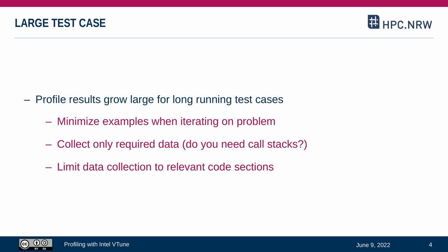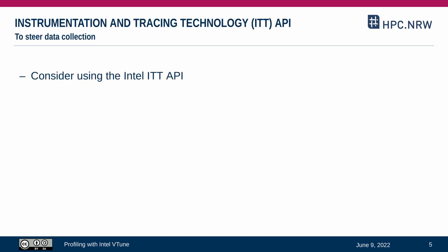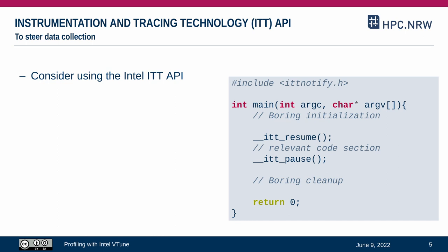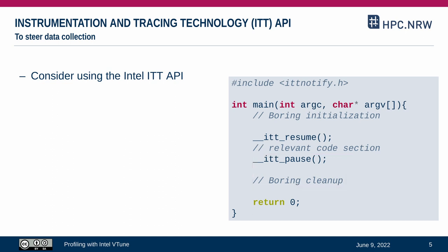Finally, you can limit the data collection to only a small subsection of your application. This is possible with the Intel Instrumentation and Tracing Technology library. With the ITT API, you can signal vTune to resume or pause the collection from within your program code. In this minimal example, we start vTune with paused collection and skip irrelevant sections of the program initialization. Then ITT instructs vTune to start the collection for the interesting code section. At the end, we pause again to also skip some irrelevant finalization parts.